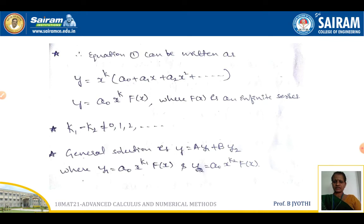Equation 1 can be written as y = x^k·(a0 + a1·x + a2·x² + ...), i.e., y = a0·x^k·f(x) where f(x) is an infinite series. When k1 − k2 is not an integer, the general solution is y = a·y1 + b·y2, where y1 = a0·x^k1·f(x) and y2 = a0·x^k2·f(x).